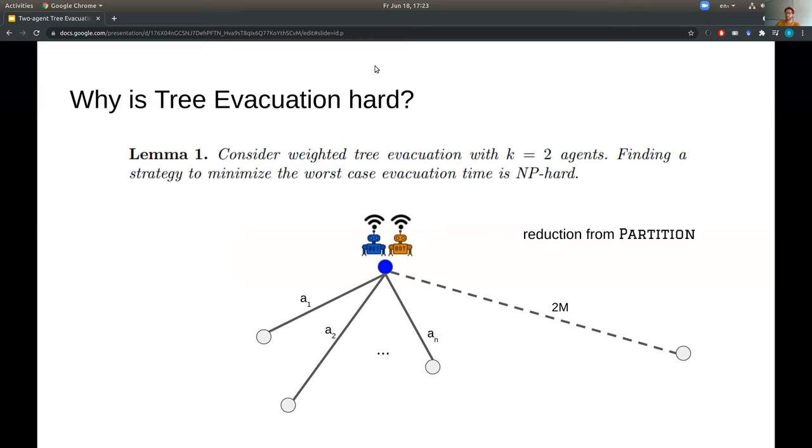It's a reduction from the partition problem. So we have a root node here with robots. And for each element of the partition instance, we add a leaf at distance corresponding to the element. So here we have leaves at distance a1, a2, a3, a4, a5. And you can already see that this looks a lot like partition, since the robots can explore the leaves very efficiently, if and only if there is a solution to the original partition problem. But as a detail, we also have to add an extra edge to a faraway leaf, shown here at distance 2m, to make the reduction work. So this proof is both for the global and for the local communication models, and it can also be easily extended to more agents.